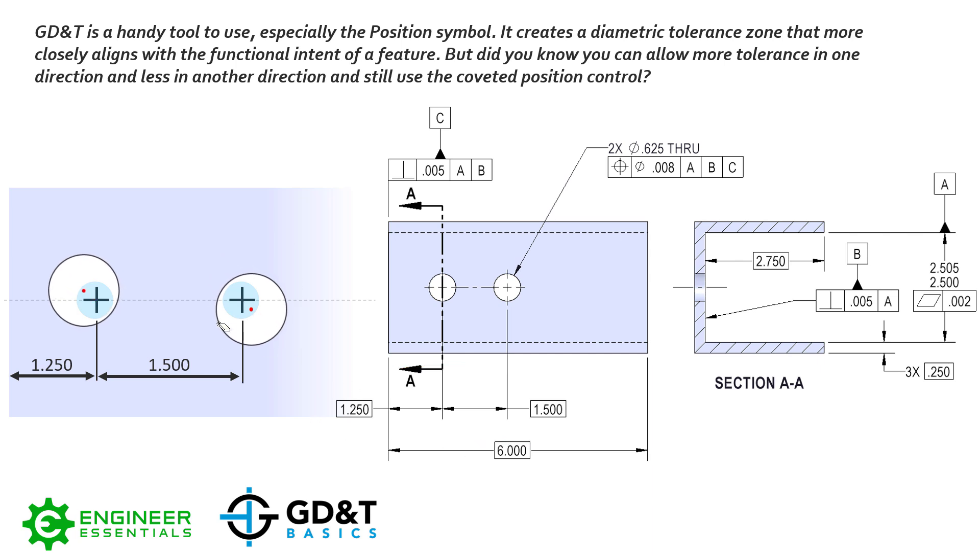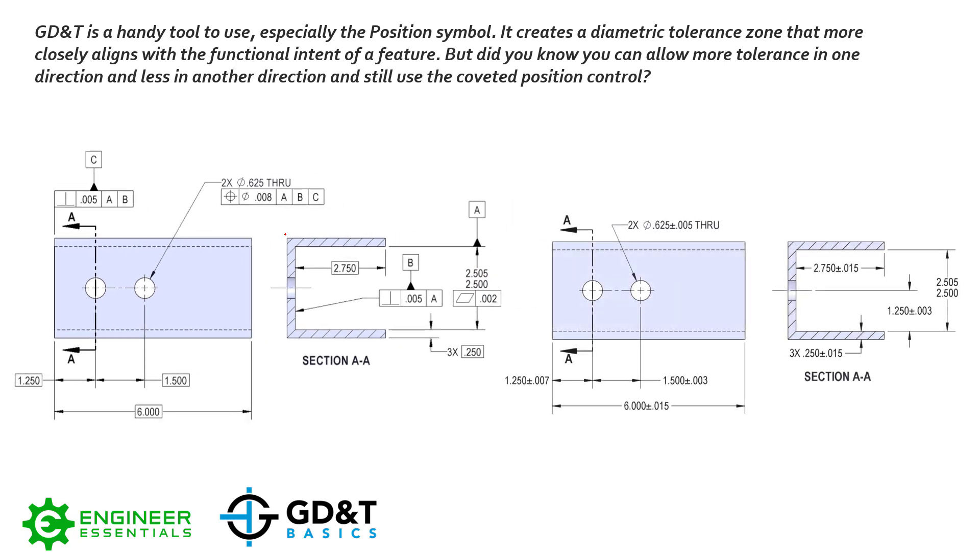These two holes can deviate inside their tolerance zones any way they want. So that left hole deviated up to the left, the right hole deviated down to the right. As long as those axes of these holes stay inside these tolerance zones fixed at true position, we have passed our position specification. You can see here there'd be a maximum distance between these two holes. If one deviated all the way over radially four thousandths and the other one deviated the other direction four thousandths, our max distance between the center of these holes would be 1.508.